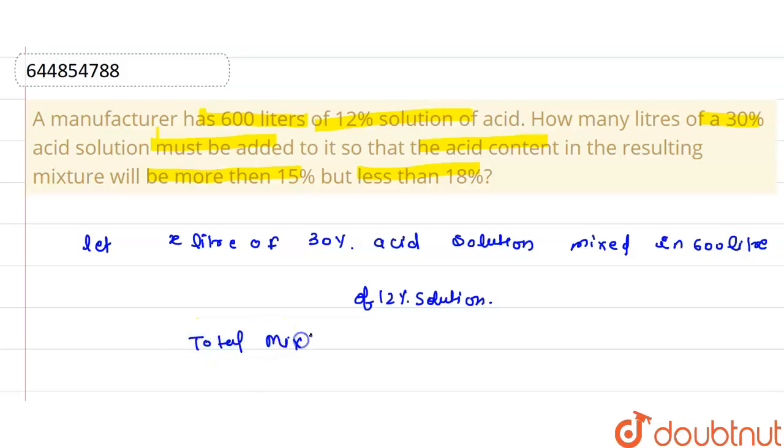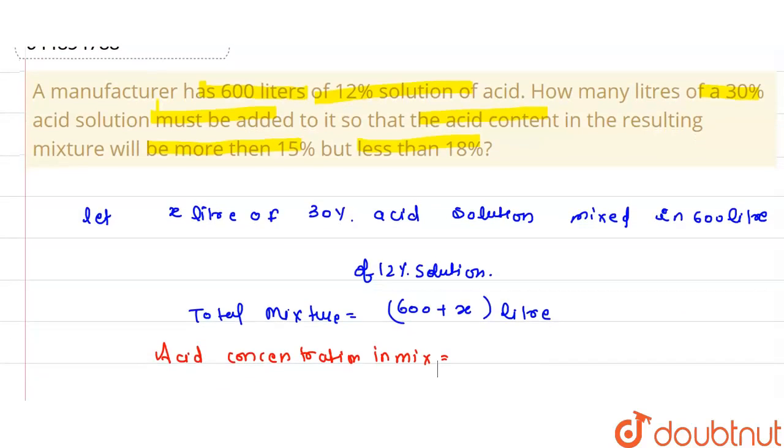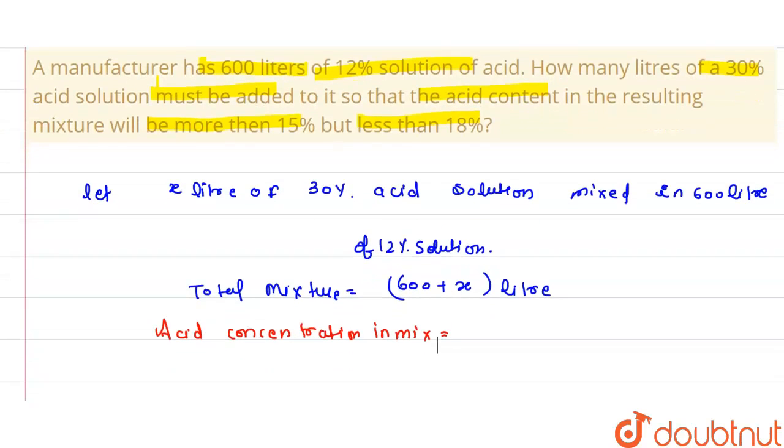Total mixture equals 600 plus x liters. This is the total mixture. Now find the acid concentration in the mixture. Here, x liters of 30% acid solution, so we write